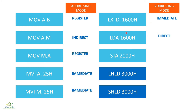The next instruction is LDA 1600H. What this does is load the accumulator from a particular memory location having address 1600H. The data is present in memory, and the memory address is already given directly in the instruction itself, so this instruction has direct mode of addressing. Similarly, STA 2000H: the memory location where the data has to be stored is directly given in the instruction, so it also has direct mode of addressing.